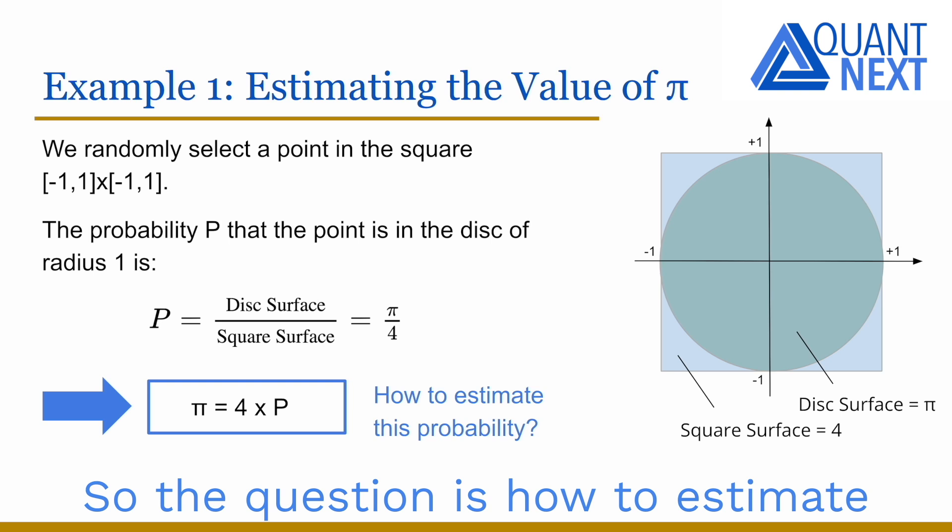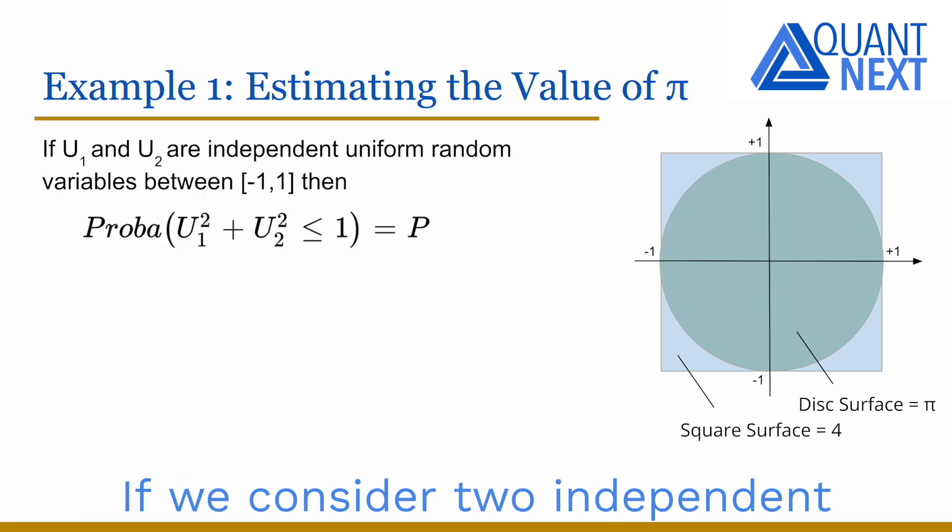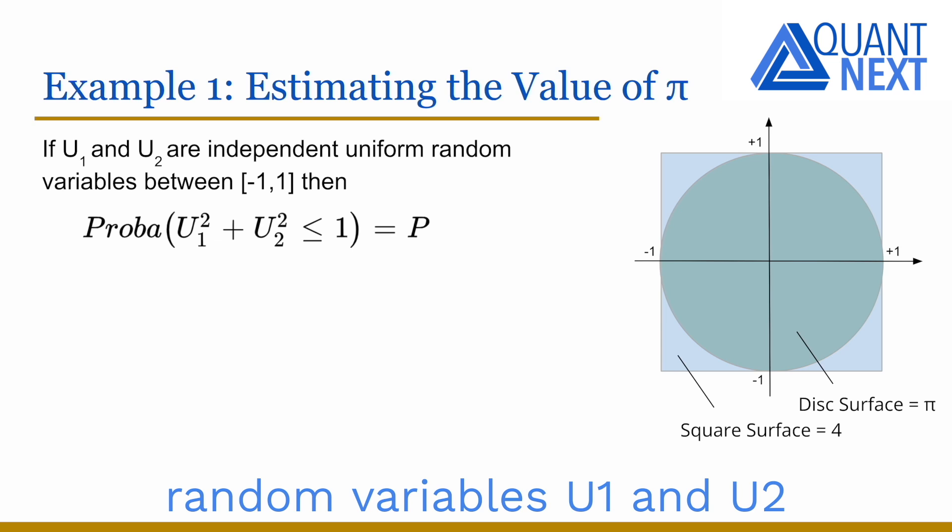So the question is how to estimate this probability. If we consider two independent random variables u1 and u2 uniformly distributed between minus one and plus one, the probability that the sum of the square of the two is below one is equal to p.